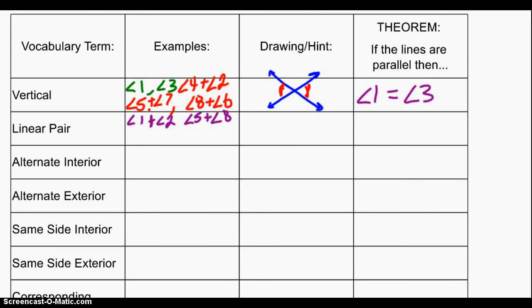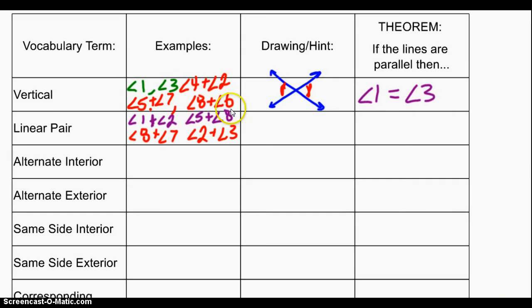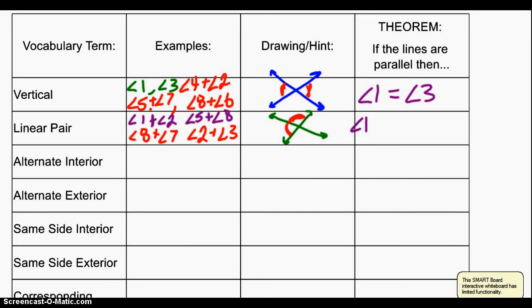Pause the video and see if you can write down a couple more examples of linear pairs. Here are just a couple examples, but there are a ton more on the diagram, so don't worry if you have different ones. To draw a linear pair, think about an intersection of two lines — a linear pair are two angles that are adjacent. And if you have a linear pair, those two angles are going to add up to 180 degrees, because linear pairs are supplementary.